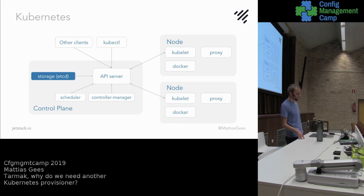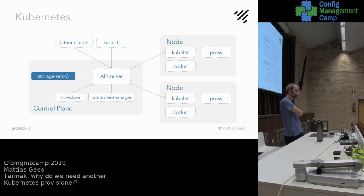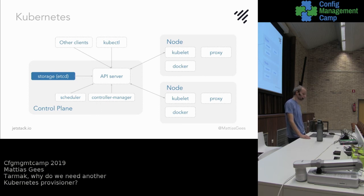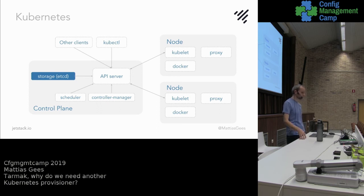All these components — the API server specifically — interact with etcd, which is used for storage, and that's where all your Kubernetes data lives. Besides the control plane, we also have the nodes where most of our pods will be run, where all our web applications will be run.